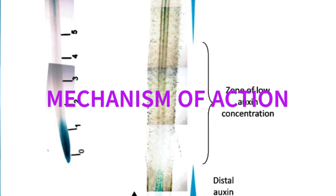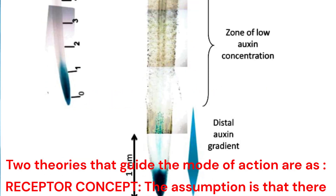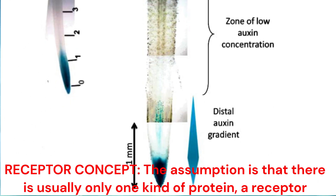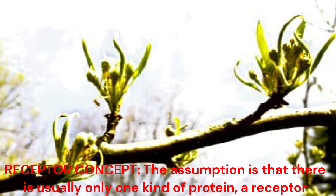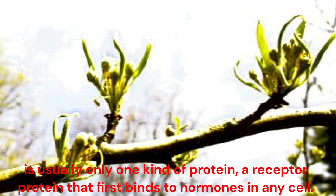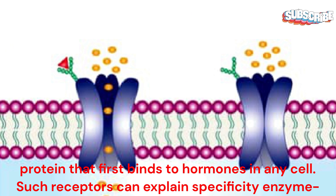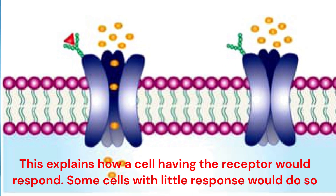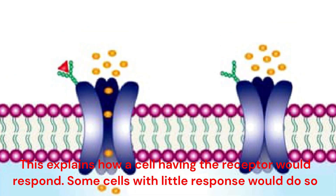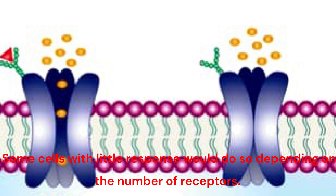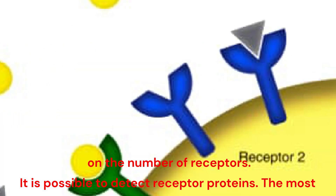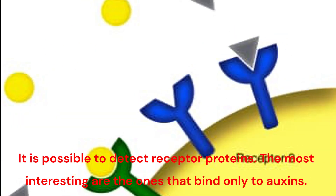Mechanism of action: Two theories guide the mode of action. The receptor concept assumes that there is usually only one kind of protein — a receptor protein — that first binds to hormones in any cell. Such receptors can explain specificity, similar to enzyme-substrate complexes. This explains how a cell having the receptor would respond, and cells with little response would vary depending on the number of receptors. It is possible to detect receptor proteins; the most interesting are those that bind only to auxins.